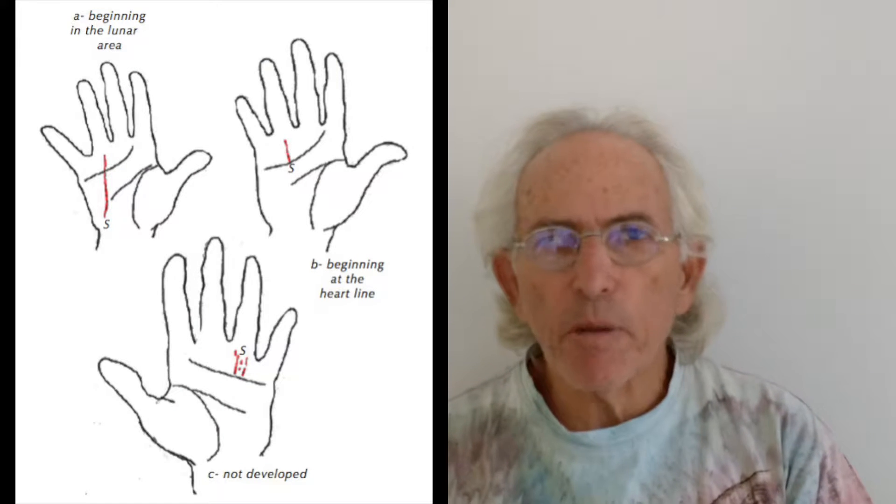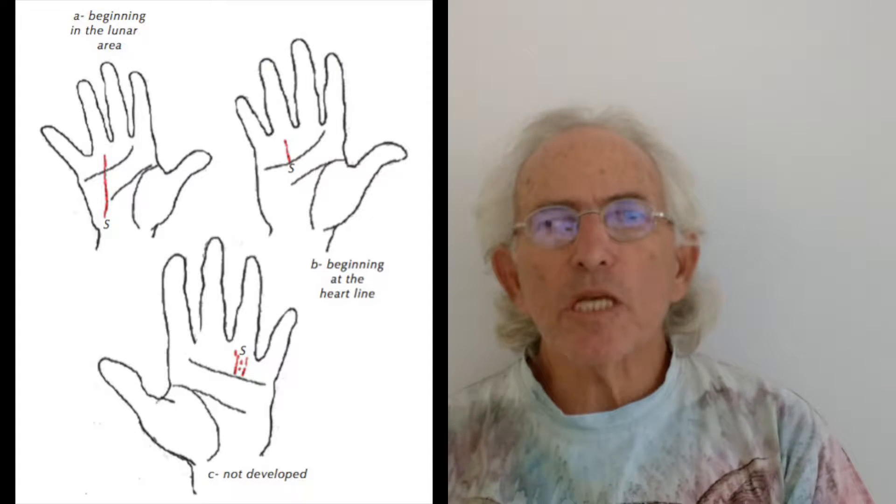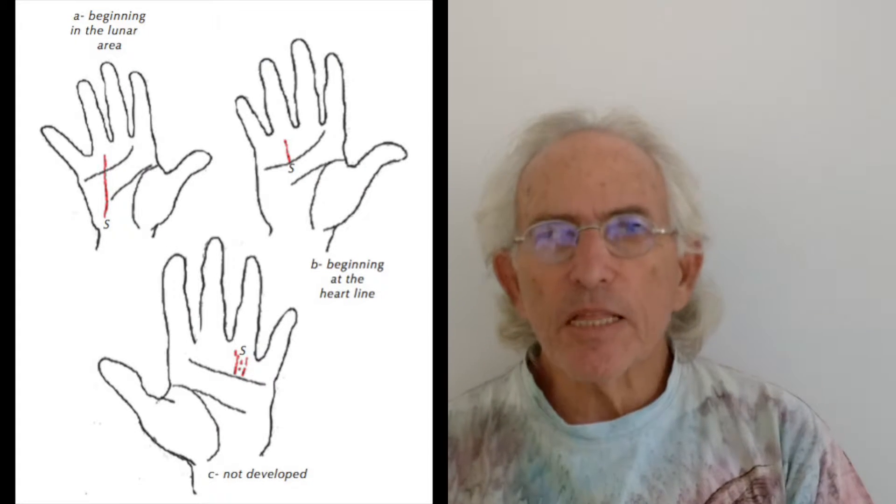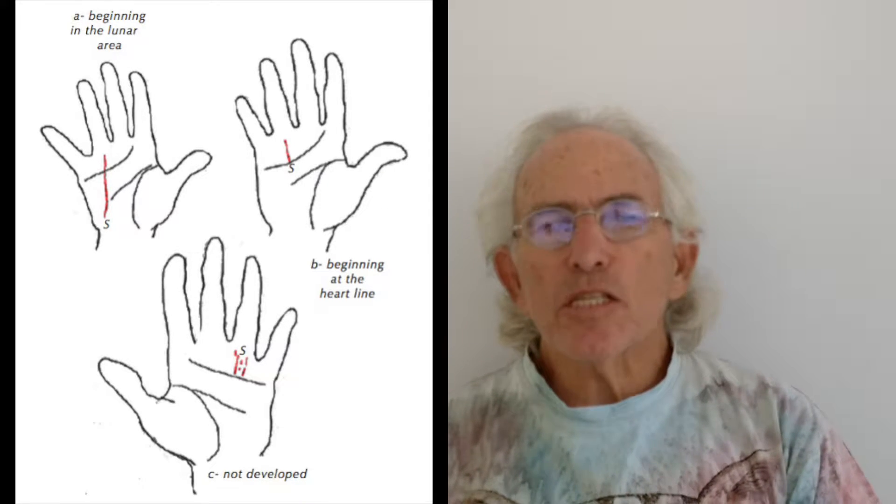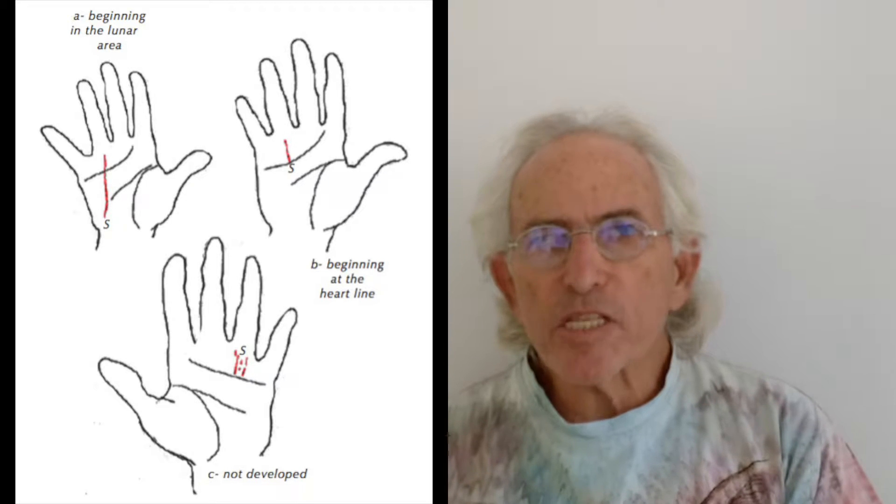So the next situation that we have is the sun line. Now that's any line that's starting somewhere in the palm that goes up and points to the sun line, or to the sun, or the sun mount, is considered a line of sun.